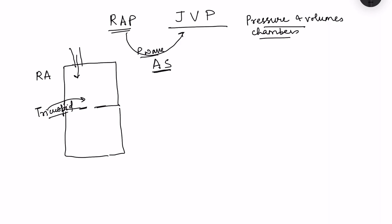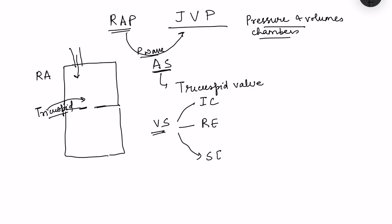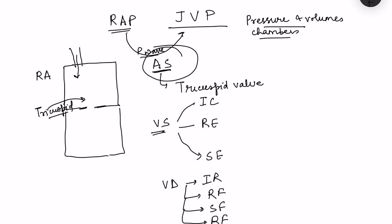After the P wave there will be atrial systole. Just after atrial systole, there will be closure of the tricuspid valve and start of the ventricular systole phase. Then there is a rapid ejection phase, then a slow ejection phase. After the slow ejection phase there will be closure of the pulmonary valve, then ventricular diastole begins — consisting of isovolumetric relaxation, first rapid filling phase, slow filling phase, and a second rapid filling phase caused by the atrial systole itself.